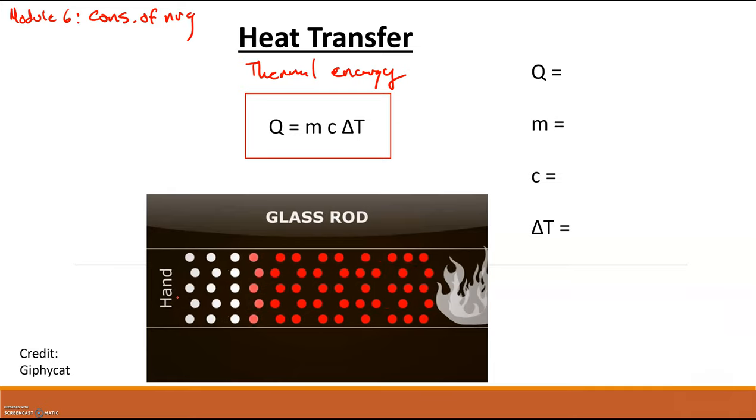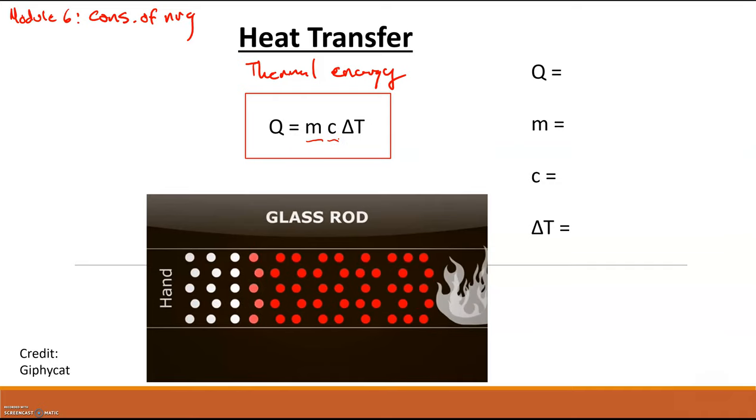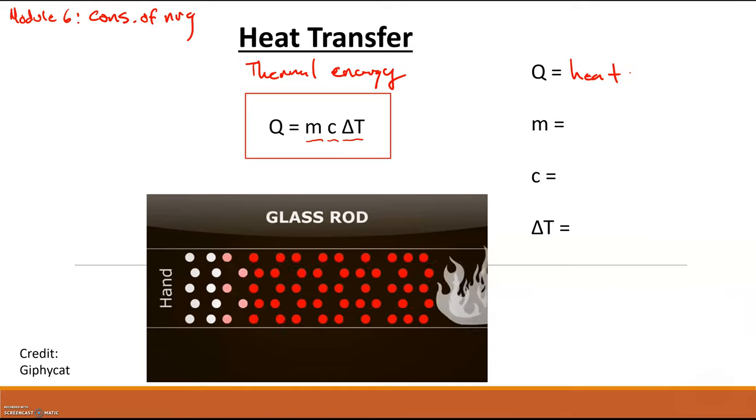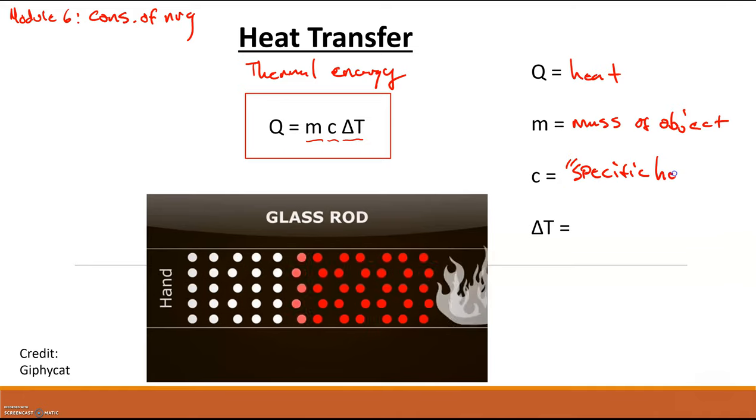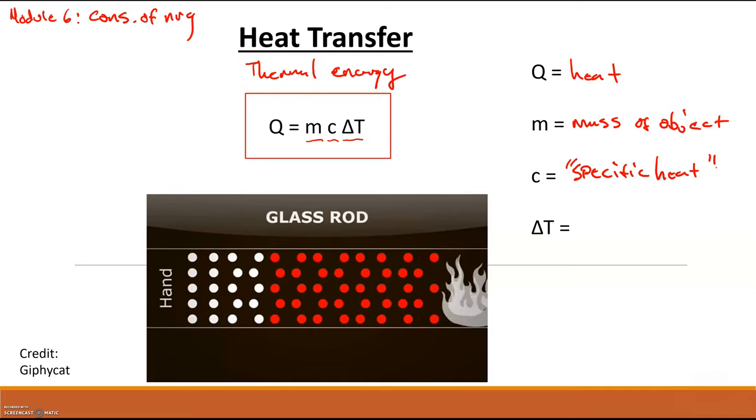And so for heat, the equation for heat is equal to the mass m, c the specific heat of an object, and the change in temperature of the object. So Q is heat, m is mass of object, c is the specific heat. Basically how easy is it to transfer heat in this type of object. And then ΔT is the change in temperature.